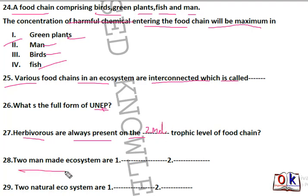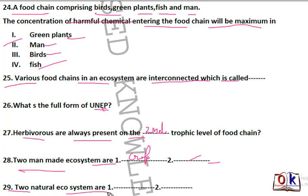Question 28: man-made ecosystems are which ones? Crop field is one, aquarium and garden can also be man-made ecosystems. Question 29: natural ecosystems are which ones? Forest and river are natural ecosystems — river and forest will be the right answer.